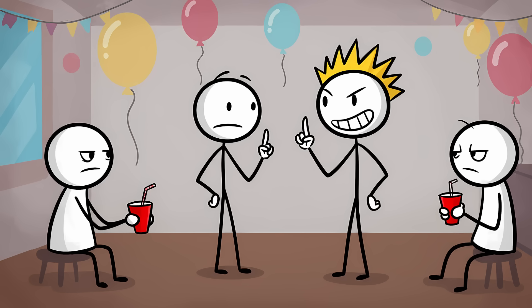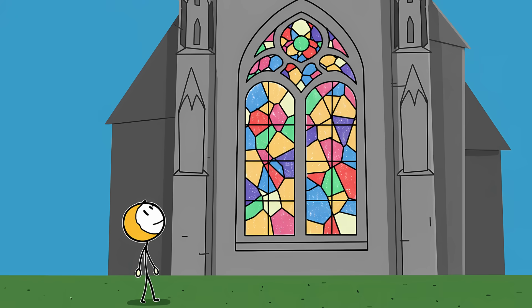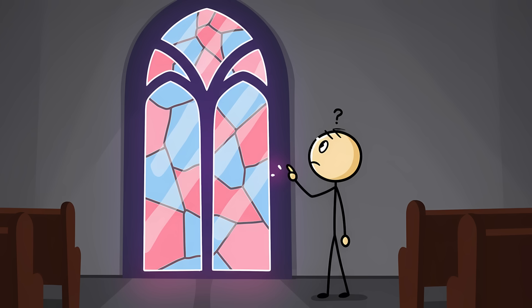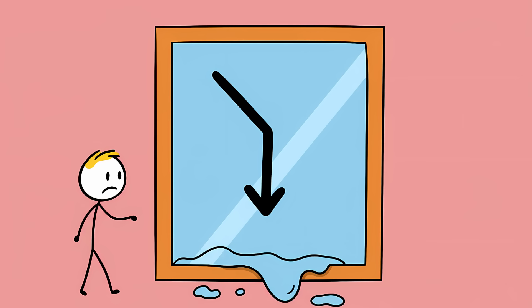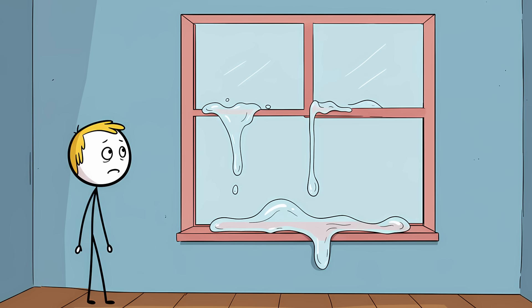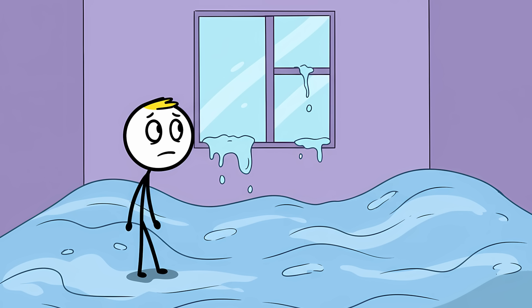This is the ultimate, well-actually fact. The kind you pull out to sound smart at a party. Go to any old European cathedral and look at the stained glass windows. You'll notice they're often thicker at the bottom than at the top. The explanation? Glass is not a true solid. It's an amorphous solid, a super-cooled liquid that is flowing downwards with glacial slowness over centuries, pulled by the relentless force of gravity. Your own windows at home are doing it right now, just very, very slowly. It's a mind-bending concept that makes the world feel a little less stable, a little more fluid.